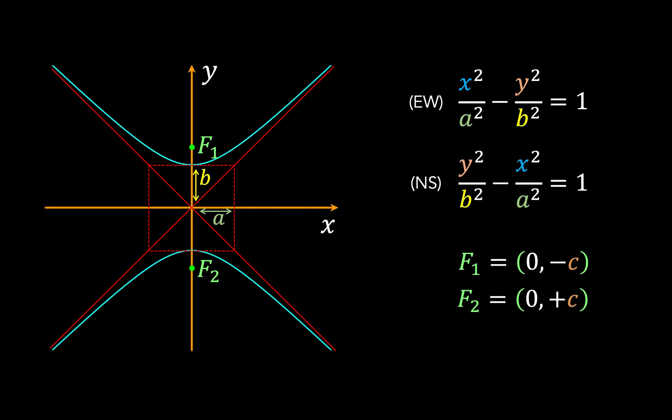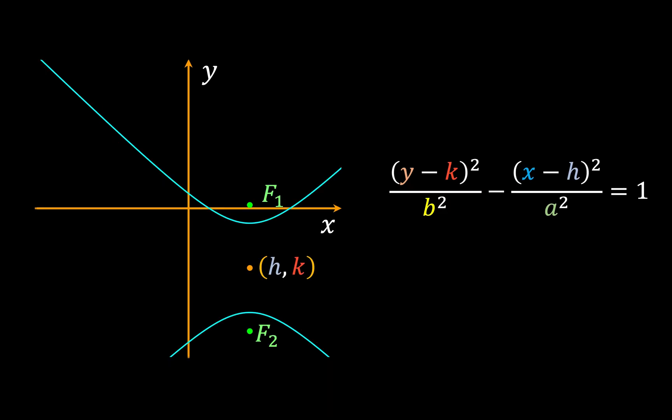Now the situation is similar with north-south opening hyperbolas, except that now the foci are distributed along the y-axis, and now the signs of the x and y terms are reversed, such that the y term is positive and the x term is negative. Now it might be worth remembering that the equation has to be modified if the hyperbola is centered on some arbitrary point hk rather than the origin, but let's not worry about that for now.